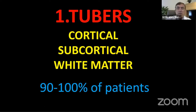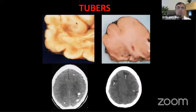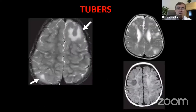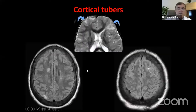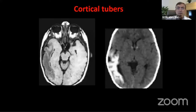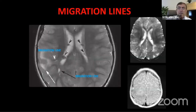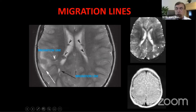Cortical tubers are usually calcified and seen in the cortex or subcortex. On MRI they are clearly visible in 90 to 100% of patients. Additionally, migration lines — radial white matter lines — can be seen going through the brain, for example in the frontal parietal area.